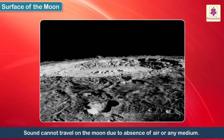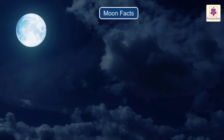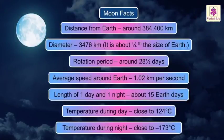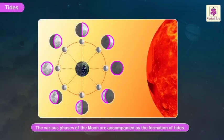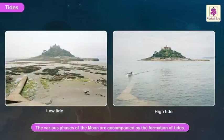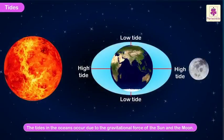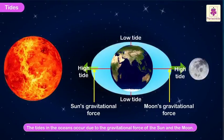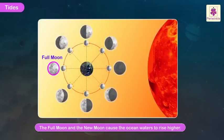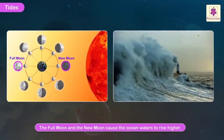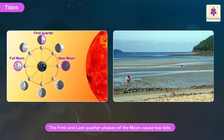Moon facts: Tides. The various phases of the Moon are accompanied by the formation of tides. The tides in the oceans occur due to the gravitational force of the Sun and the Moon. The full moon and the new moon cause the ocean waters to rise higher as compared to the first and last quarter phases of the Moon.